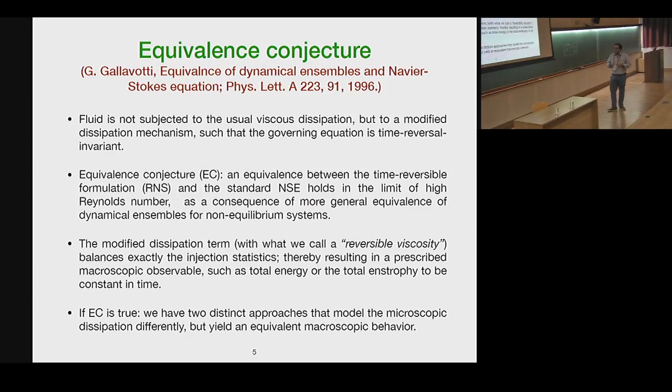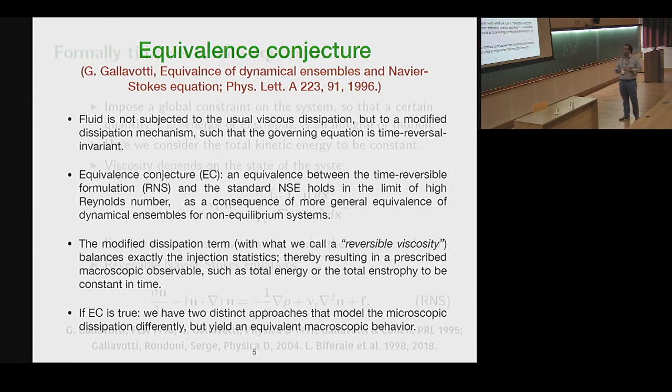What is essentially happening, the modified dissipation term with what we call a reversible viscosity balances exactly the energy injection statistics, thereby resulting in a prescribed macroscopic observable, such as total energy or enstrophy, to be constant in time. And now what this gives us, if this conjecture is true, then we have two distinct approaches that model microscopic dissipation differently, but yield an equivalent macroscopic behavior. So this is the broad idea that we are going to use.